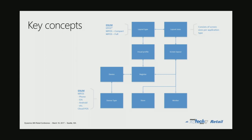Here at the middle is the register itself. A register is associated to a device, and a device has a device type. This concept has been around previously, but until the fall release it actually caused some problems in screen layouts — how those were assigned, designed, and utilized — and this single enum of device type was also used to determine the layouts that were applicable.